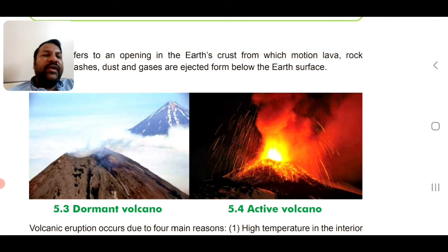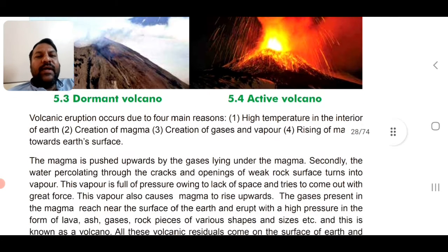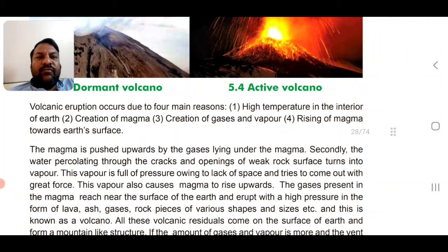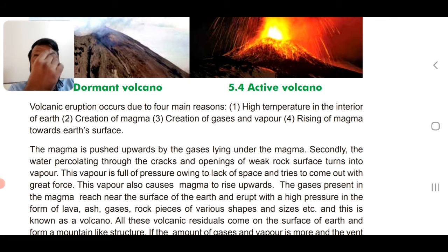So there are three types of volcanoes: dormant, which is about to burst, and active, which is currently erupting. The four major reasons for volcanic eruptions are: high temperature in the interior of Earth, creation of magma, creation of gases and vapour, and rising of magma towards Earth's surface.